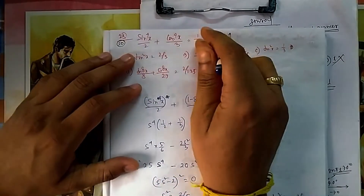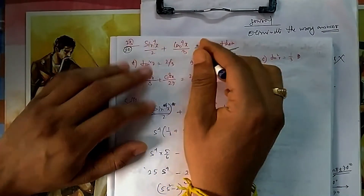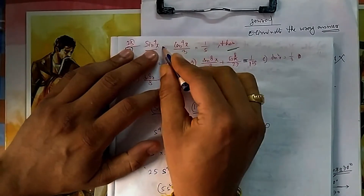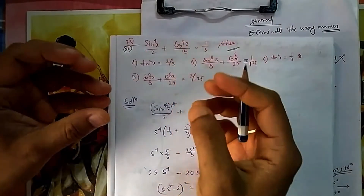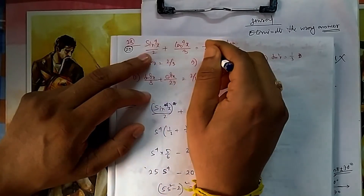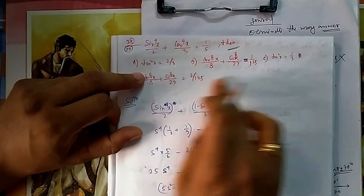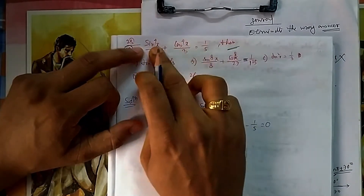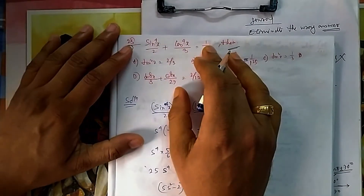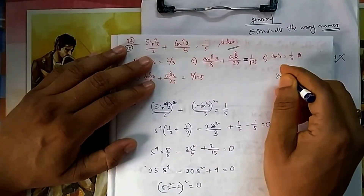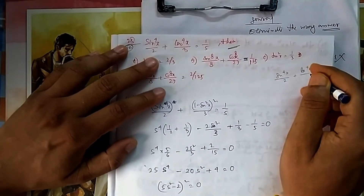Now for question 20, this is not a general approach question — nothing general is given here. If you put x equal to 0, then it gives 0 and 1/3 and 1/5, which is not satisfied. It is not easy to find sin x and cos x such that the expression becomes 1/5 directly from standard values, so we just simplify the equation.